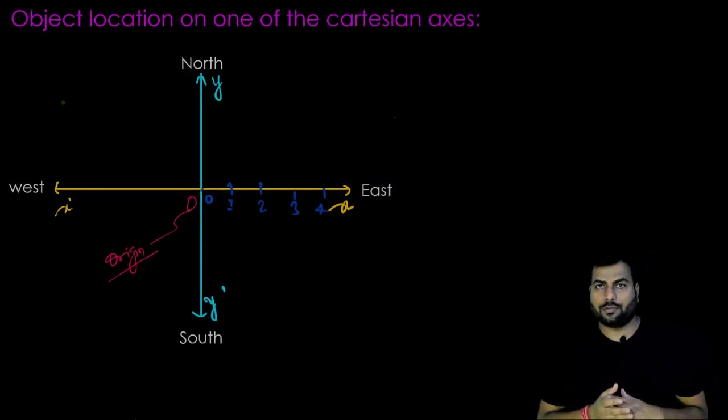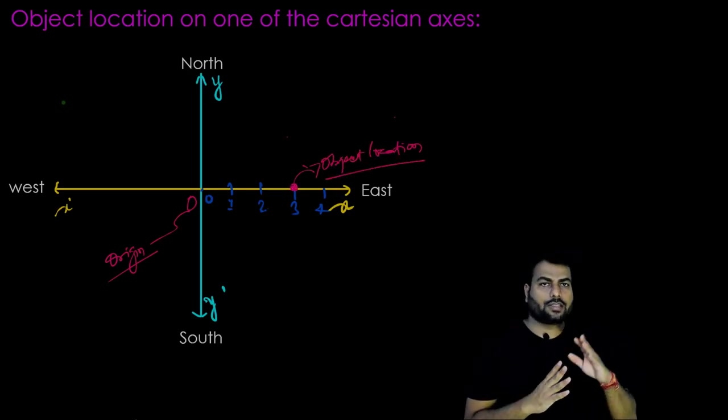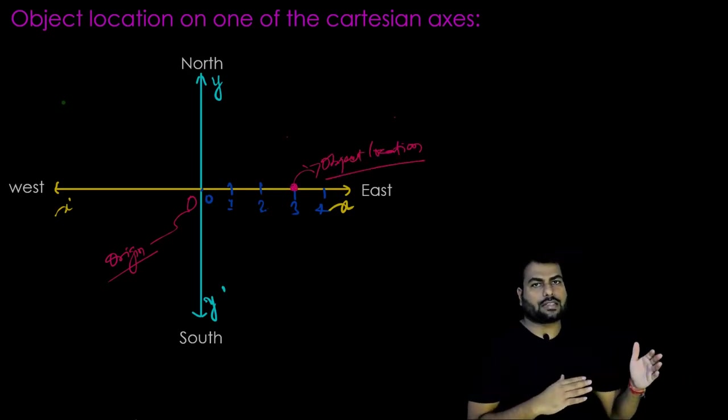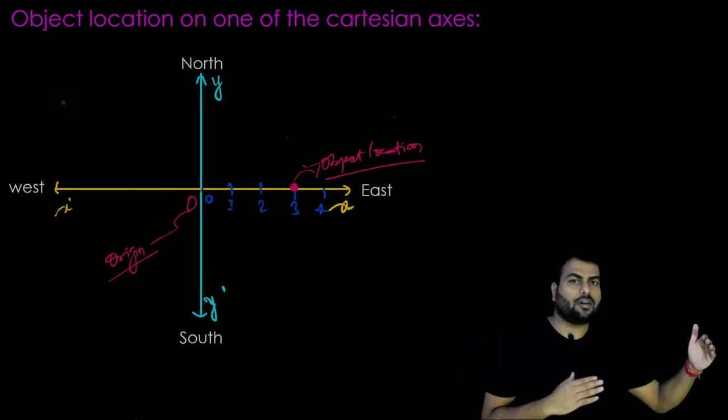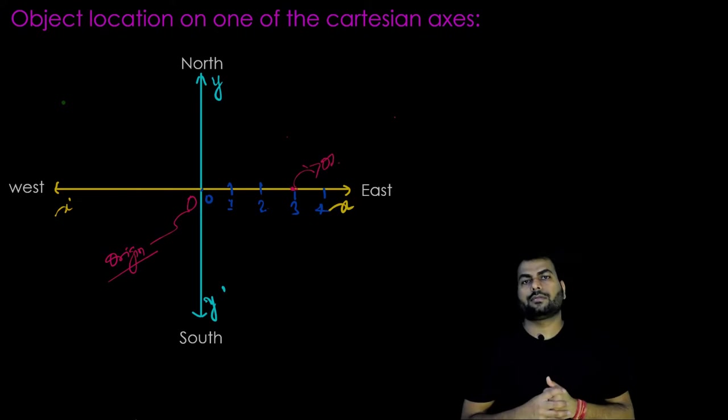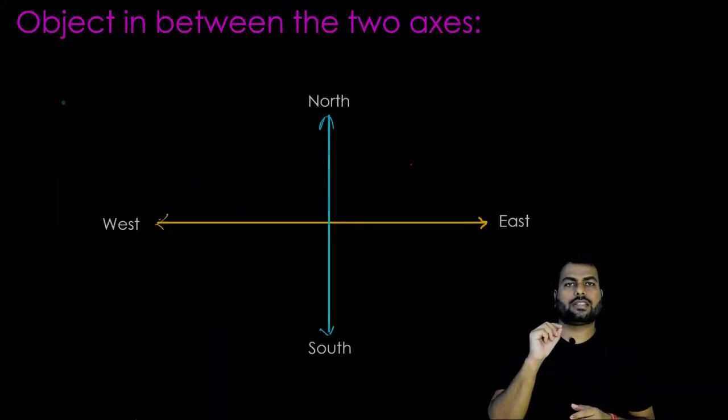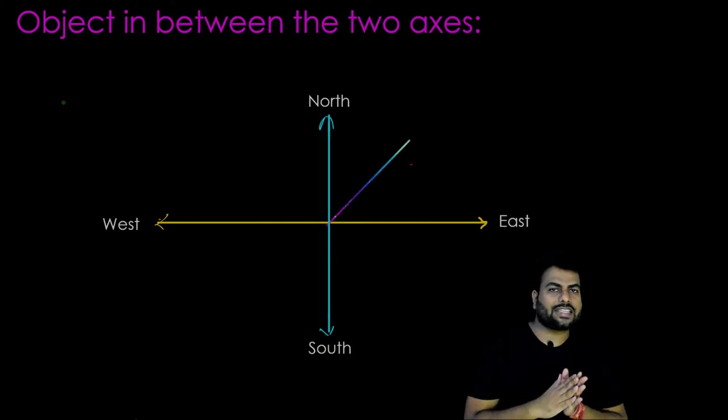Now we'll see some object location with the help of some examples. Example one, when the object location is on one of the Cartesian axis, say, positive x at three units away from the origin towards east. Second example we can take as when the object is in between the axis in north-east direction.